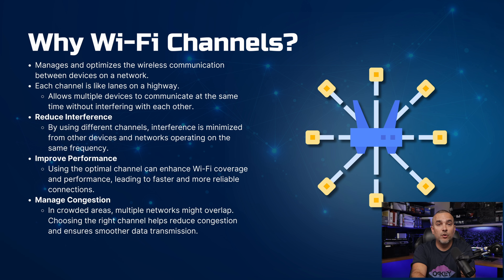Before we dive into 2.4 and 5 gigahertz frequencies, let's take a look at Wi-Fi channels and why they are used. Wi-Fi channels are the medium through which your wireless network sends and receives data. The management and optimization of wireless communication between devices involves treating each channel like lanes on a highway. This approach enables multiple devices to communicate simultaneously without causing interference.